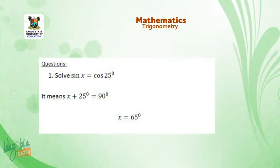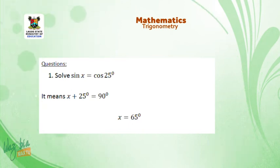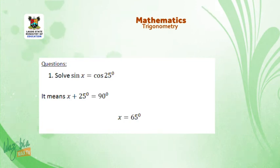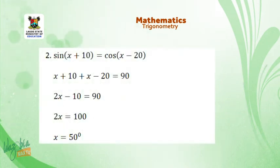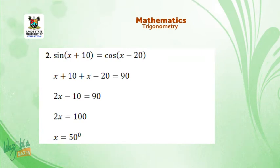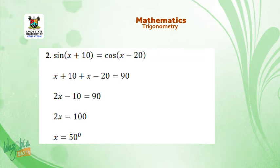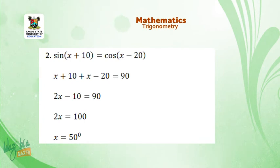Applying this: if sin x = cos 25°, then since sine and cosine are equal, the angles must be complementary — they add up to 90 degrees. So x + 25 = 90, giving x = 65 degrees. For sin(x + 10°) = cos(x − 20°), add the two angles: (x + 10) + (x − 20) = 90. Solving: 2x − 10 = 90, so 2x = 100, giving x = 50 degrees.